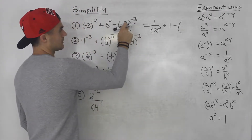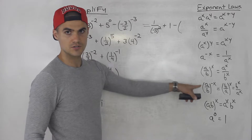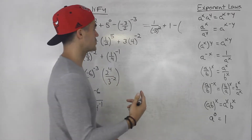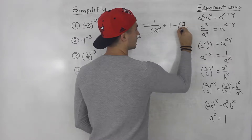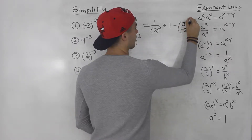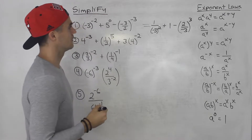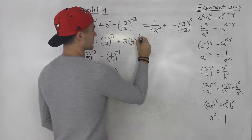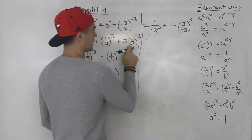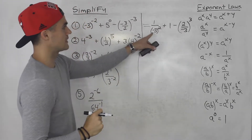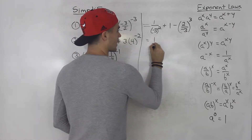Negative three over two to the power of negative three — we would use this law here, so we would flip the fraction and change the exponent to a positive number. So this would be two over negative three to the power of positive three. Then you just work it from here. Negative three to the power of two is nine, so this would be one over nine.